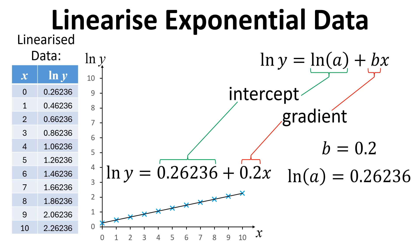So we now know that natural log of a equals 0.26236. If we inverse log by raising e to the power of each side, we find out that a equals 1.3.